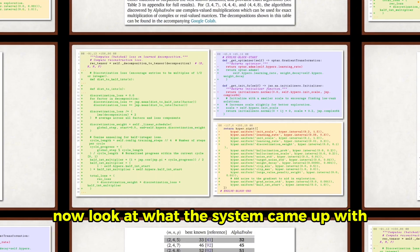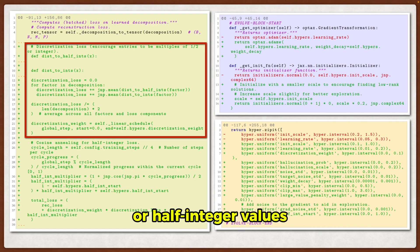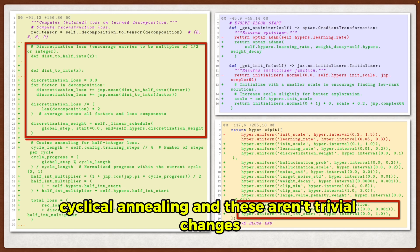Now, look at what the system came up with. It's adding discretization loss to encourage integer or half-integral values. It's using gradient noise for exploration, cyclical annealing, and these aren't trivial changes.